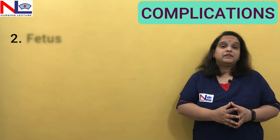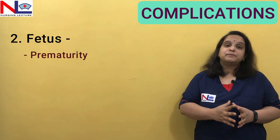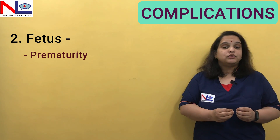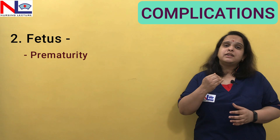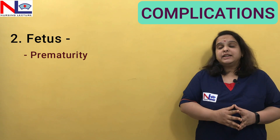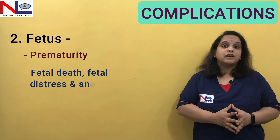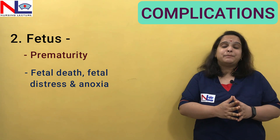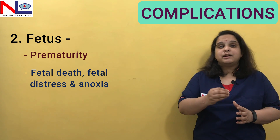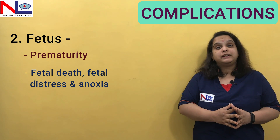Fetal complications include prematurity, which is the commonest complication, because when abruption occurs, we need to immediately terminate the pregnancy regardless of the week of gestation. If there is major separation, fetal death, fetal distress, and fetal anoxia can be seen. The degree of fetal compromise depends entirely on the degree of placental separation — the greater the separation, the more the fetus will be compromised, and fetal death can occur.